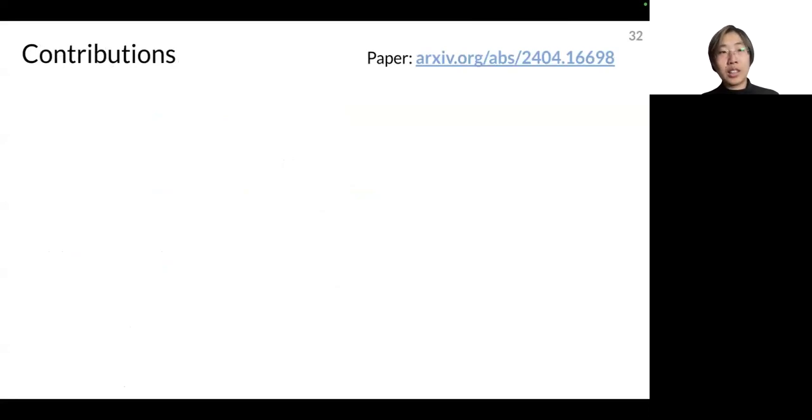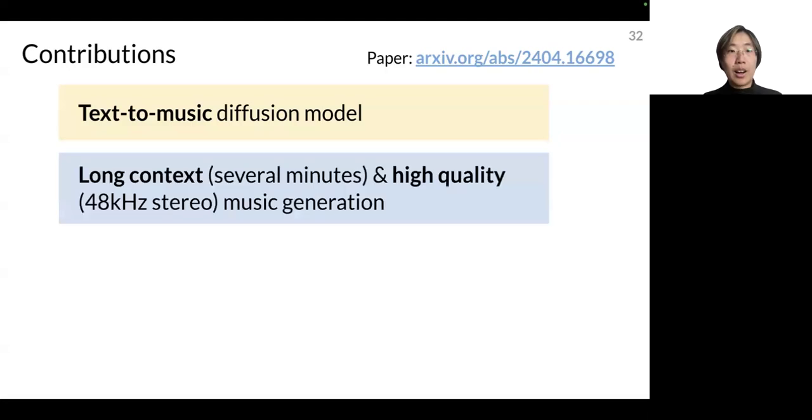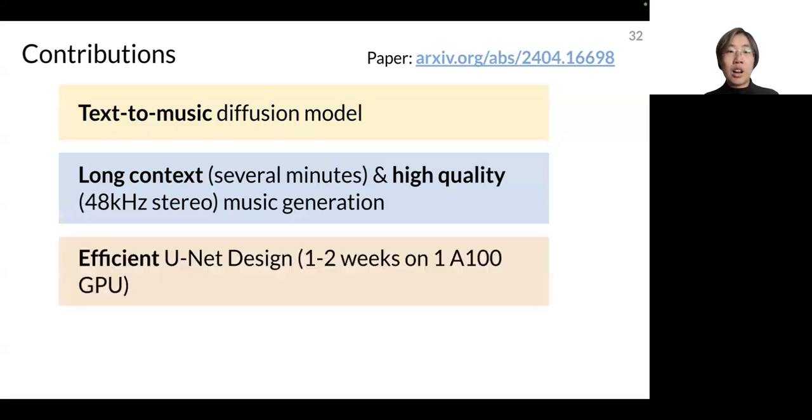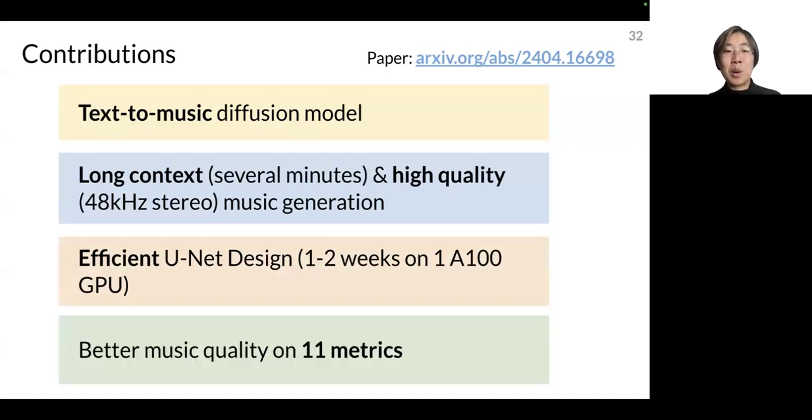To conclude in terms of the contributions that we have made there are fourfold. First we have proposed a text to music diffusion model. Second our model achieves long context and high quality music generation. Third, crucial to our model is an efficient U-net design which enables one to two weeks. For more details you're very welcome to check out our paper thank you very much.